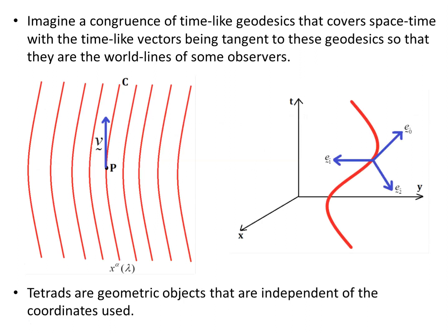Imagine a congruence of timelike geodesics — here are the red curves — that covers spacetime with the timelike vectors being tangent to these geodesics, so that they are the world lines of some observers. The congruence of curves means that for each point in spacetime only one curve, one geodesic, passes through it and together they form a congruence. The timelike unit vector, indicated with a hat, is tangent to the world line, and at each point the observer carries with them a set of spatial axes, of which two are shown here.